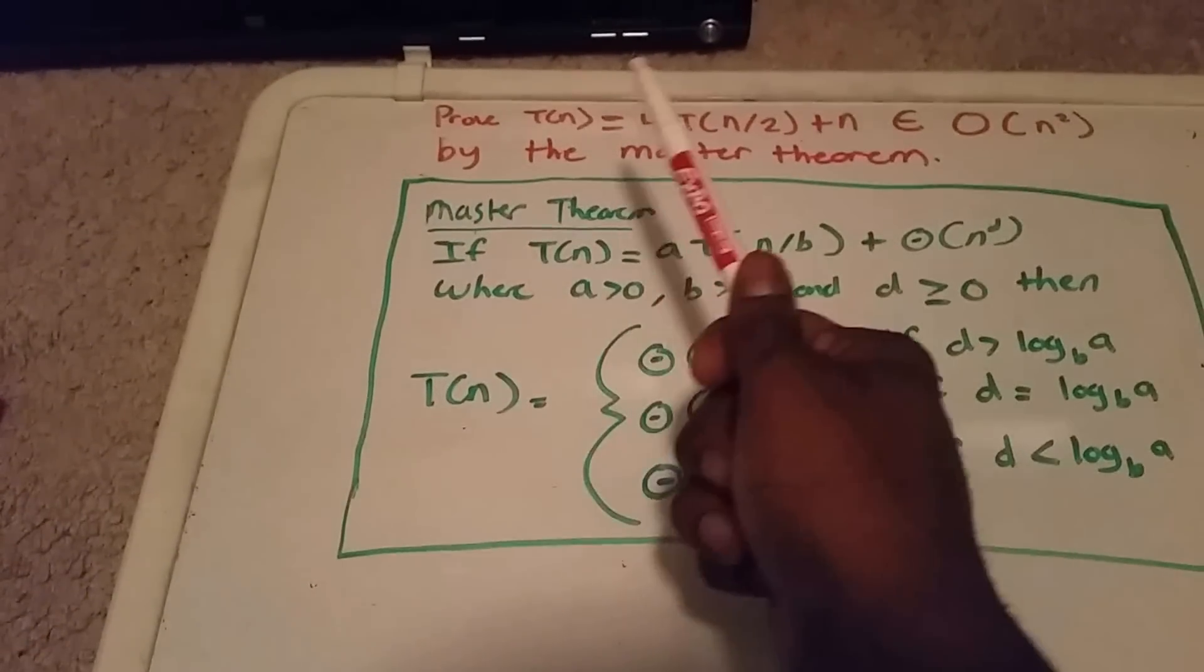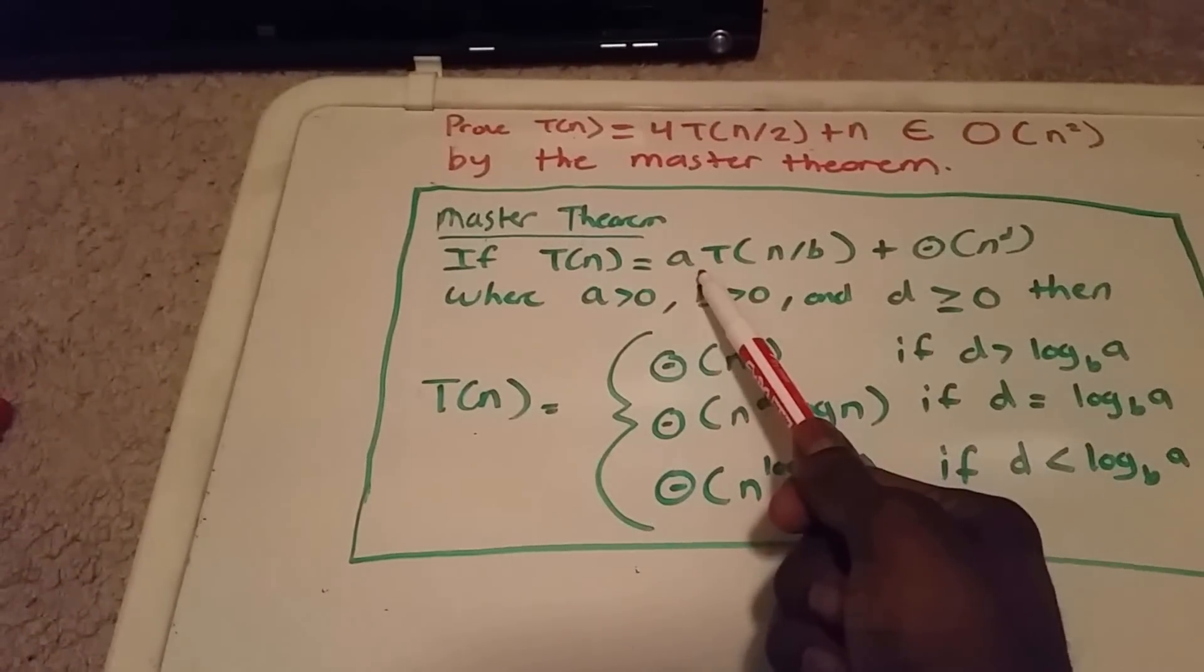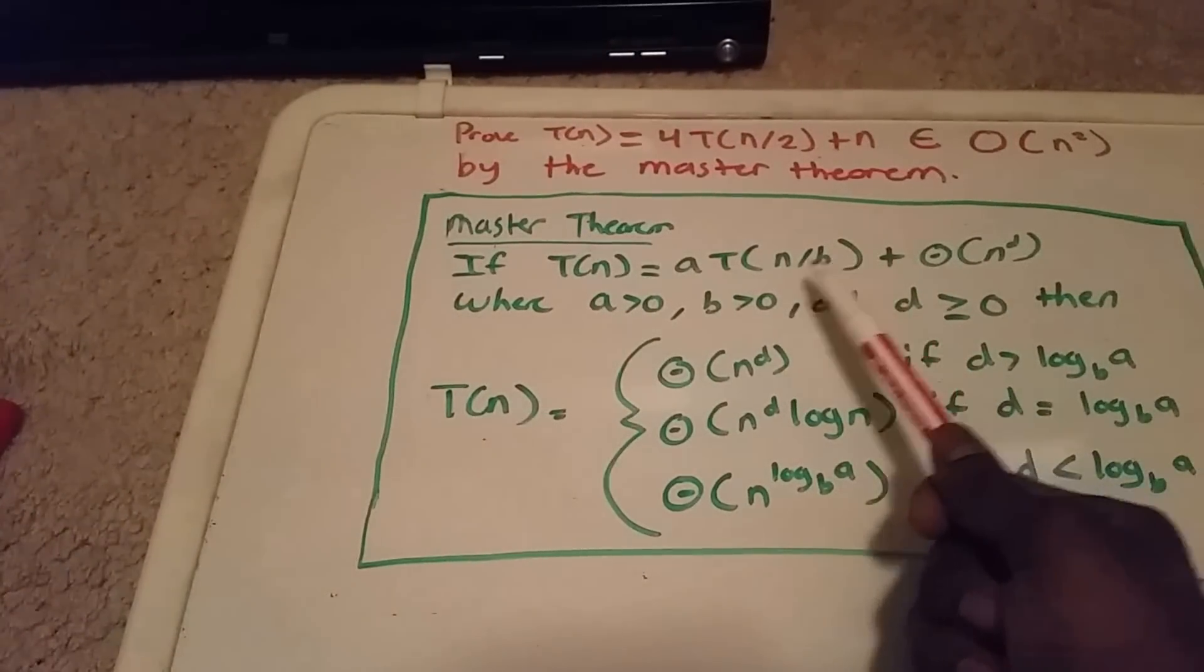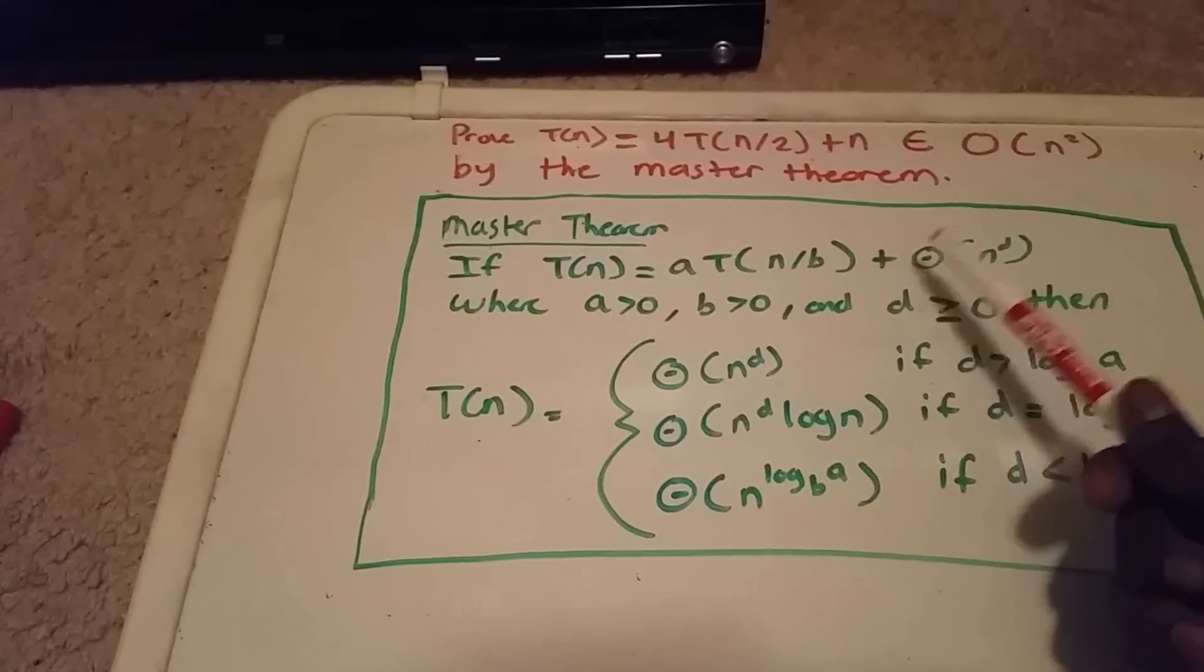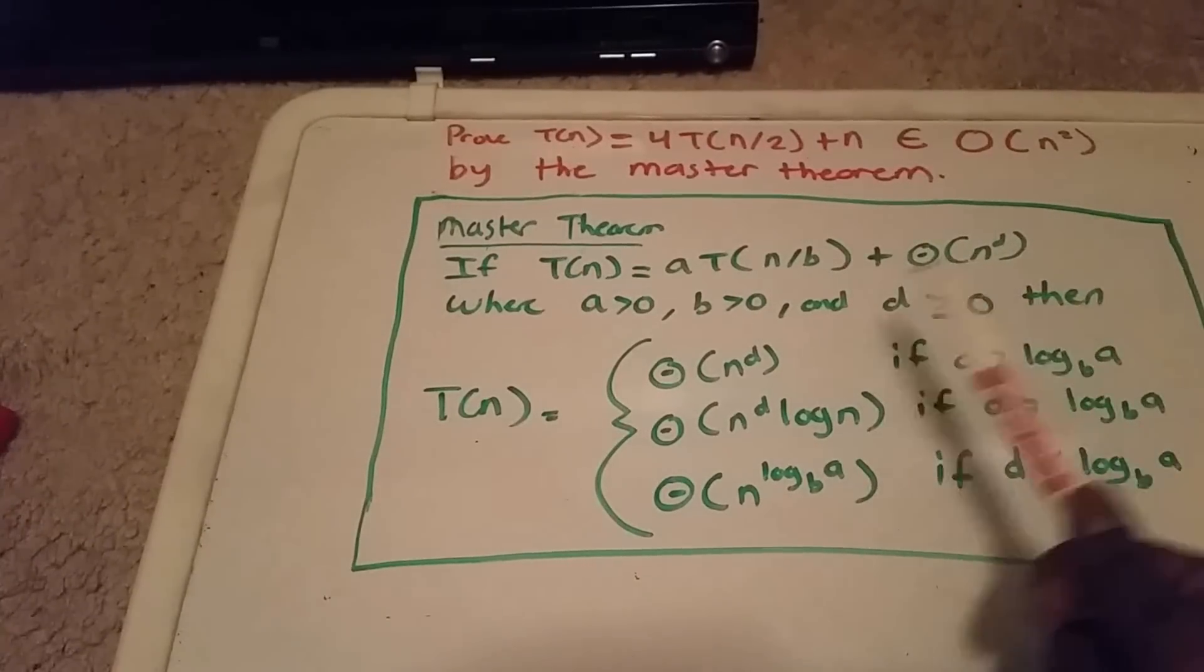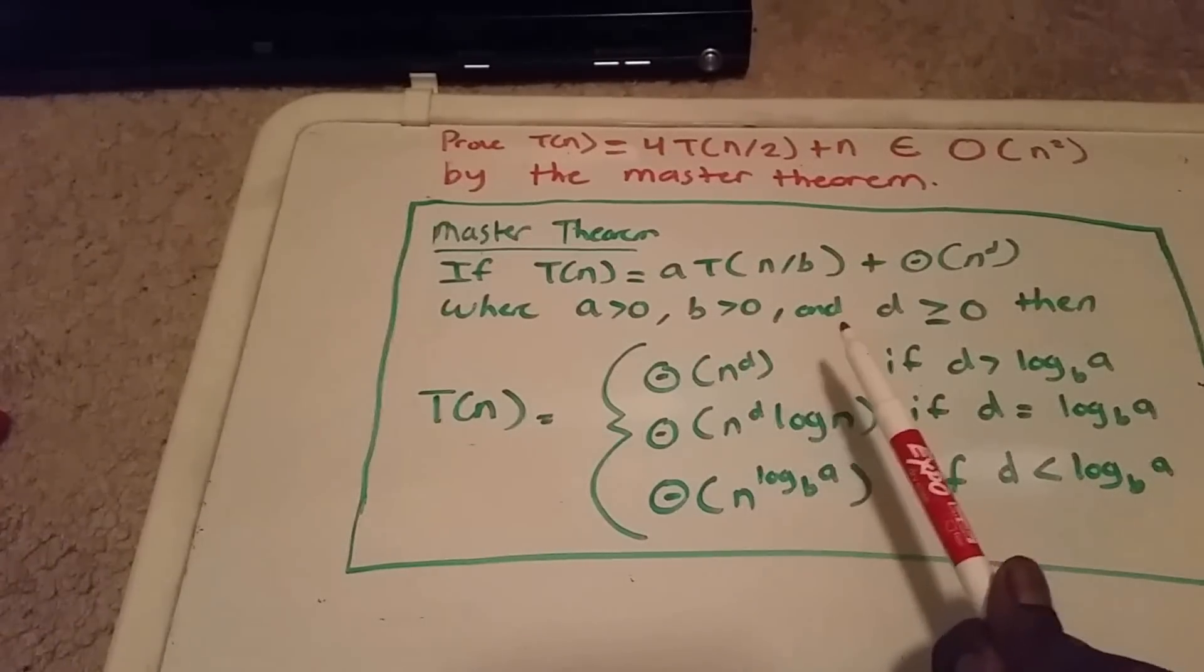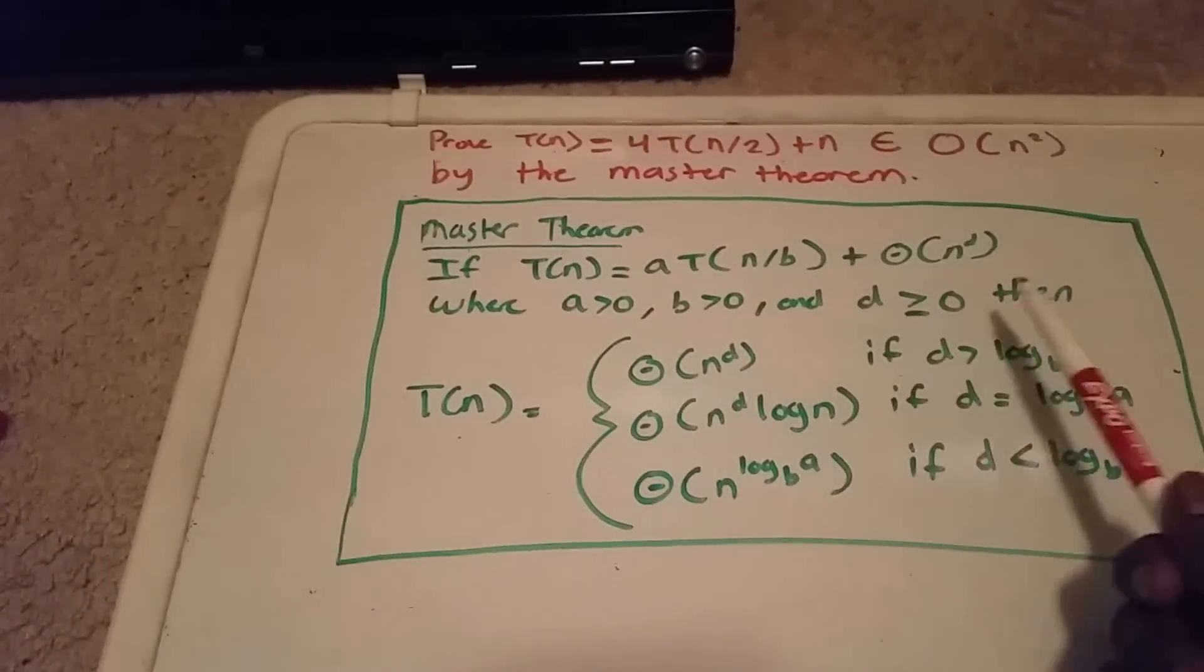The definition of the master theorem is here. If T(n) = aT(n/b) + f(n), where a is a constant greater than 0 and b is greater than 0, then we get theta of n to the d or theta of n to the d times log n given these conditions.